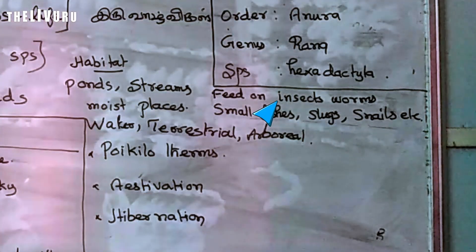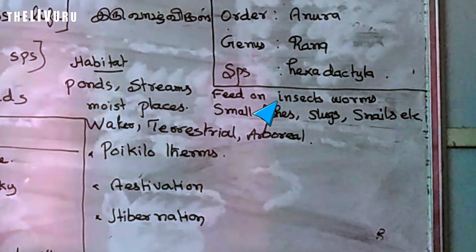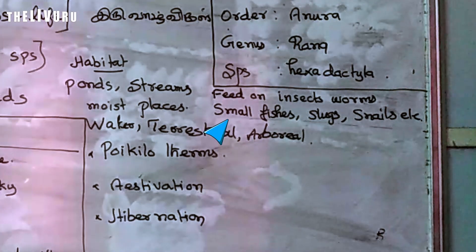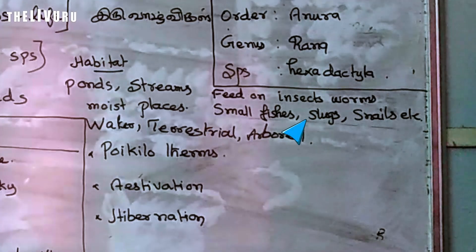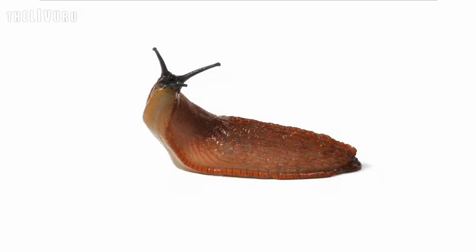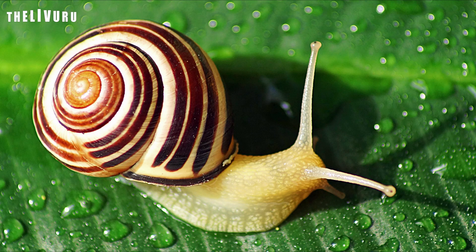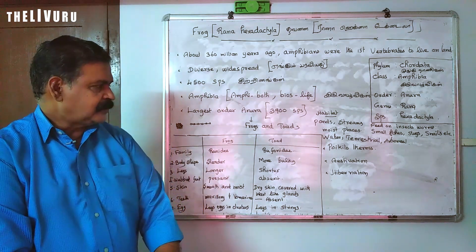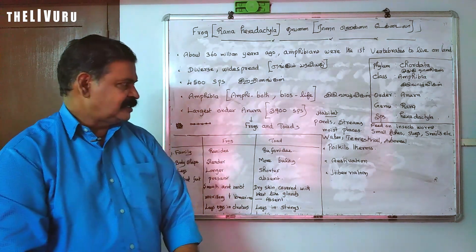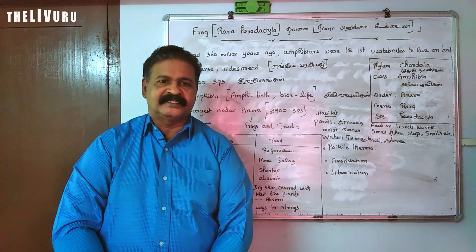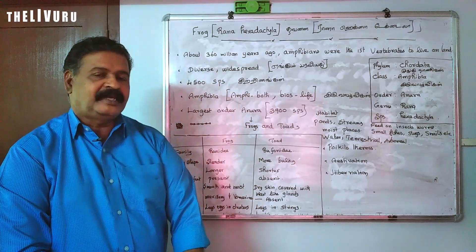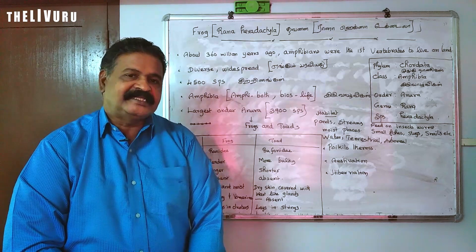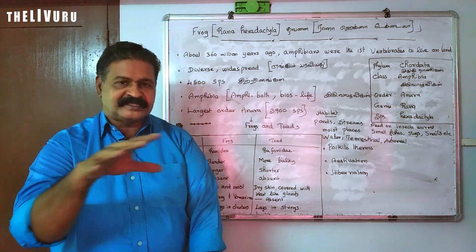Food includes small insects, small fish, and slugs.